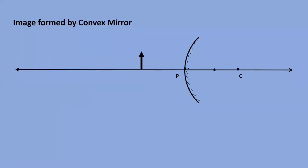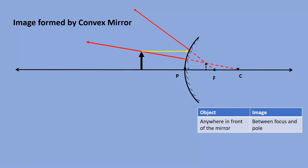Now let us draw the image formed by the convex mirror. Consider an object in front of the convex mirror. Draw a light ray directed towards the center of curvature — it retraces its path. Draw another light ray parallel to the principal axis — it appears to come from the focus. Where these light rays appear to meet, the image is formed. Because the rays do not actually meet — they only appear to meet — a virtual image is formed; we cannot capture it on a screen. The image is smaller in size, virtual, and erect. Wherever the object may be in front of the convex mirror, the image is always formed between the focus and the pole. The nature of the image is virtual, erect, and highly diminished.